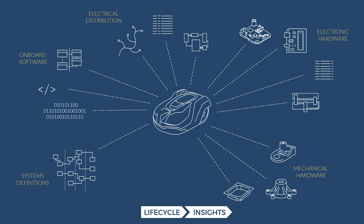We also have systems definitions. As a means to mitigate the rising complexity of these smart connected products, a lot of companies are defining definitions that span across engineering domains so they can make sure they're keeping track of everything. And of course, not everything is on the product itself — we're seeing a lot of connectivity and data streaming to cloud solutions, which really does need to be considered part of the product and its configuration. Collectively, this is the digital definition of a smart connected product.